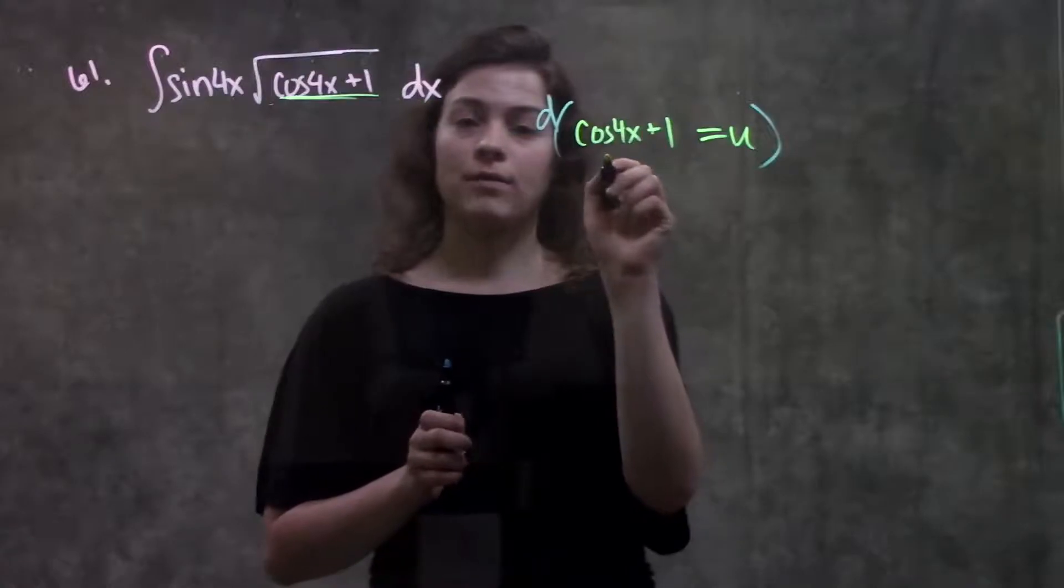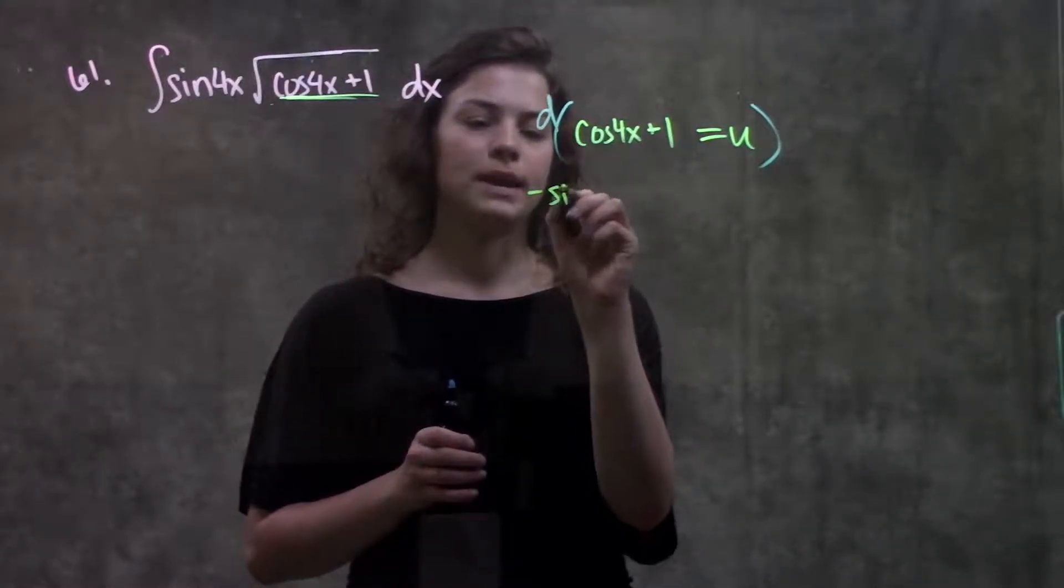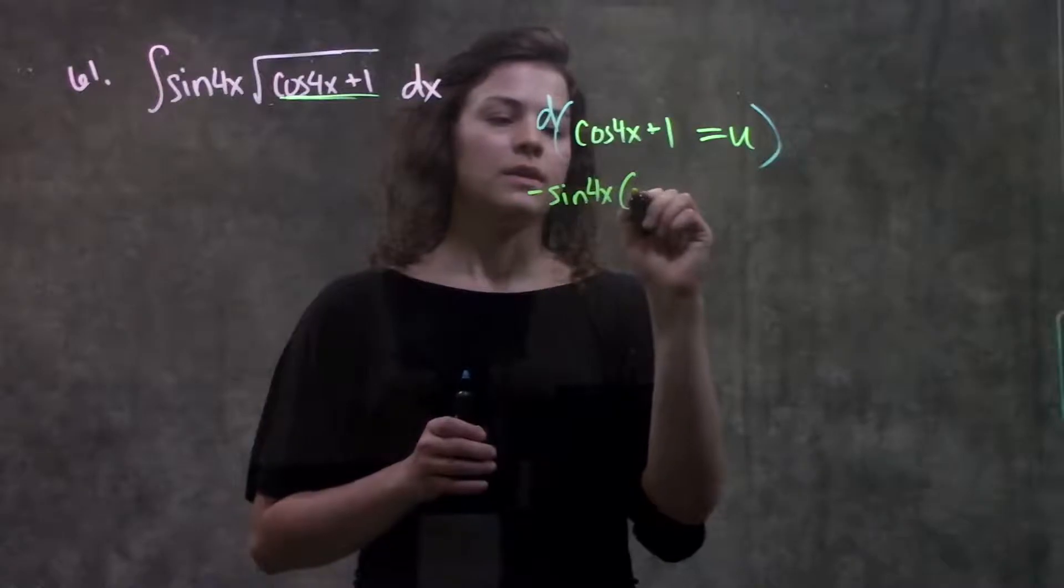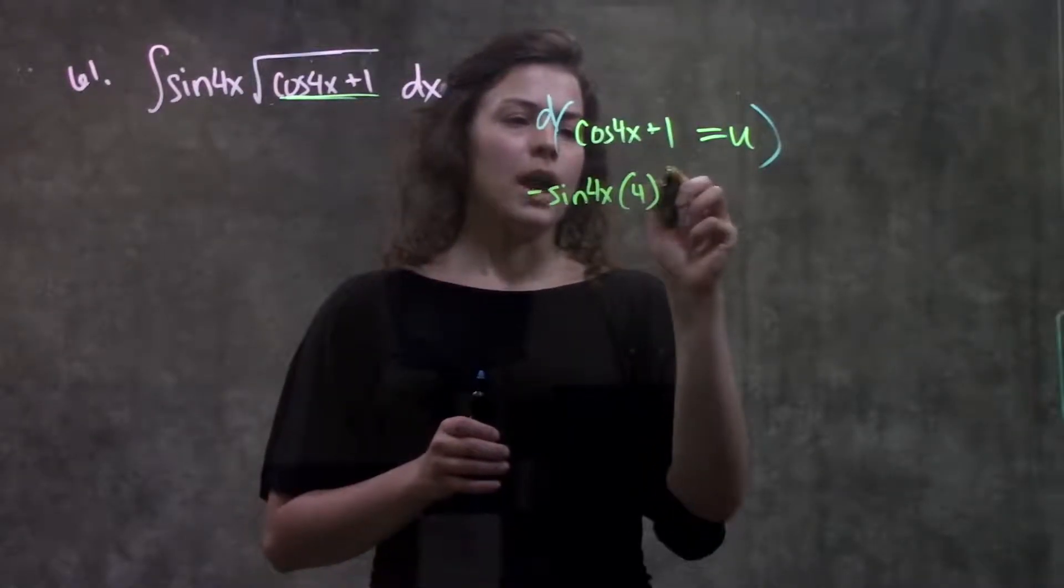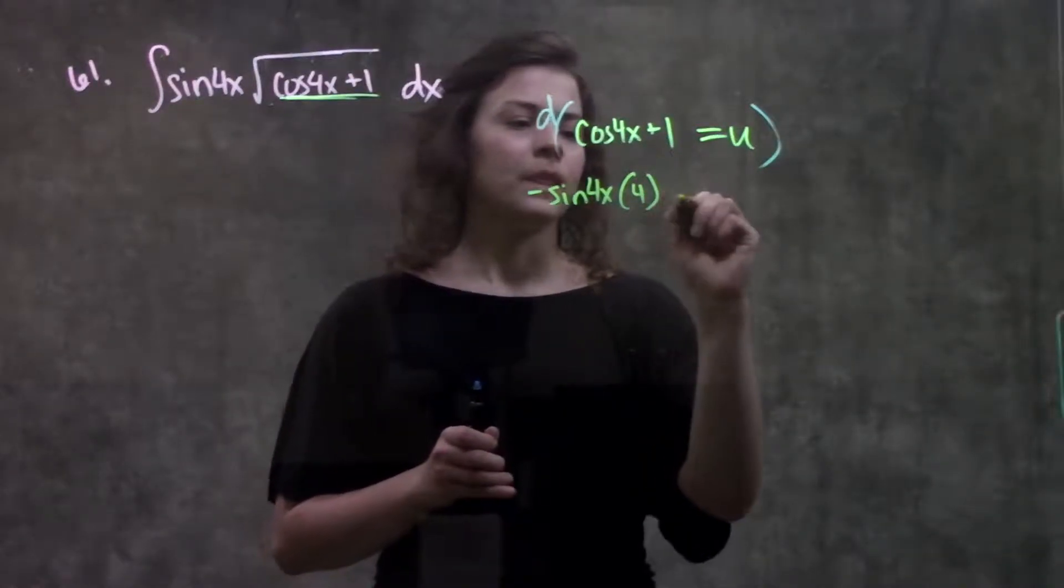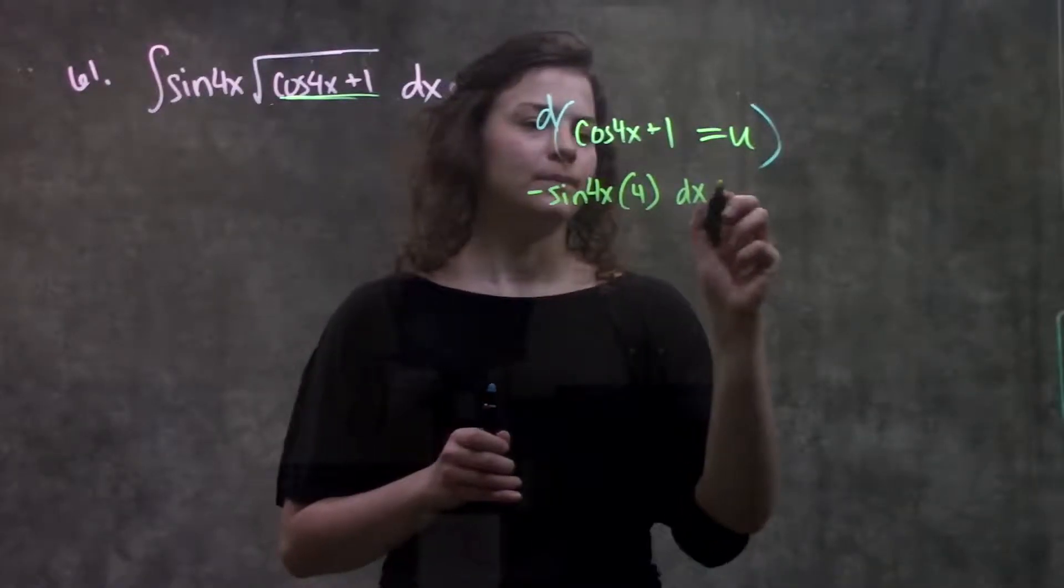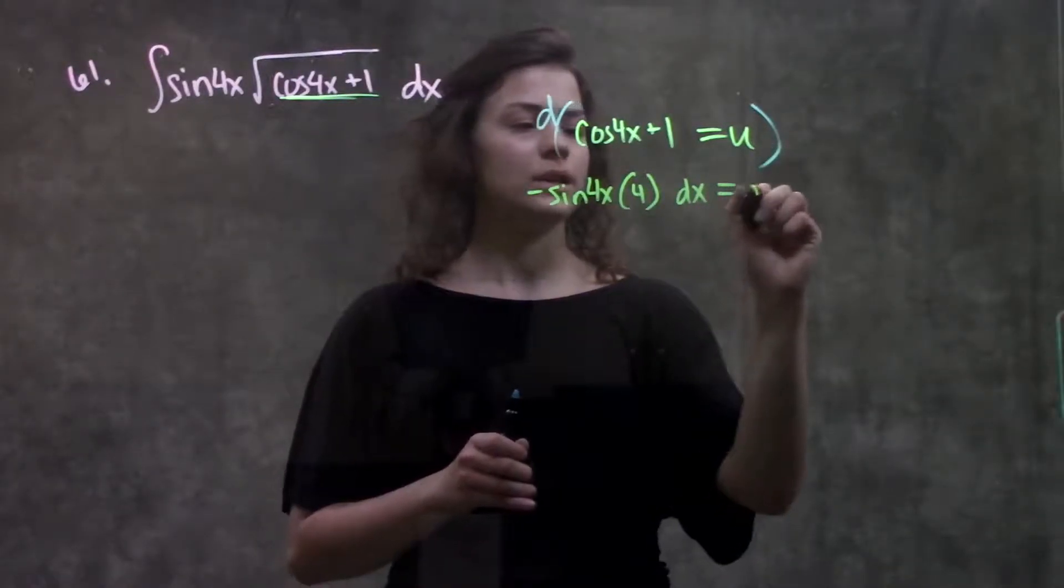So on the left here, the derivative of cosine 4x is minus sine 4x. Remember, chain rule. This will be times 4. The derivative of 1 is just 0, and we're going to write a dx equals the derivative of u is just du.